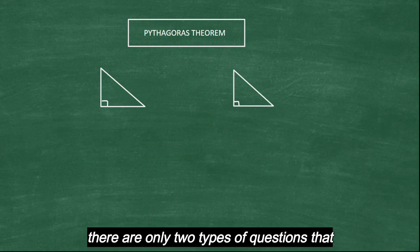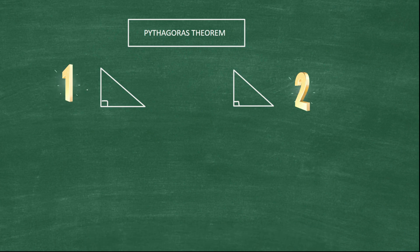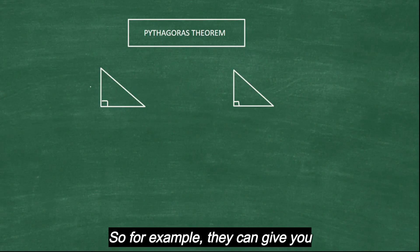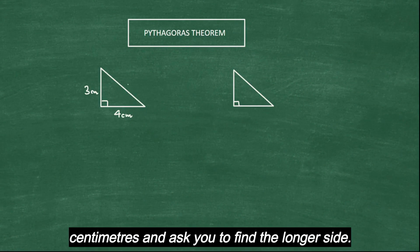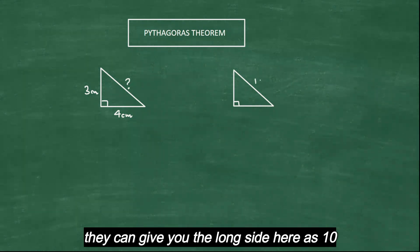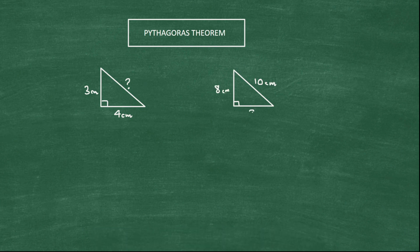So there are only two types of questions that you can get in these Pythagoras questions. For example, they can give you this as three centimeters, this as four centimeters and ask you to find the longer side or they can give you the long side here as 10 centimeters and let's say this one is eight centimeters and they can ask you to find one of the shorter sides.